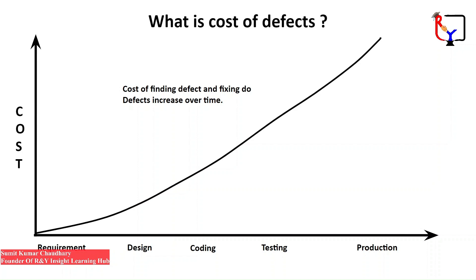A real-world case of finding a bug after the application is in production: there was a theory that one of the issues the Note 7 phones were facing involved their battery management system. The system monitors the electric flow and stops the charging procedure when the battery is completely charged. A defect in the system caused the battery to overcharge and become unstable, ultimately leading to explosions.